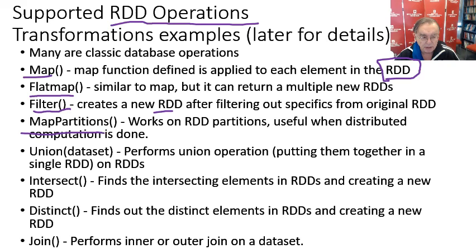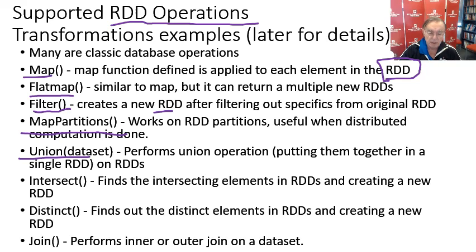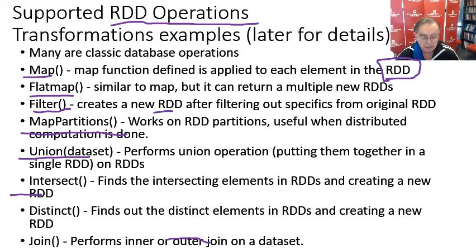We have to do these things with partitions because we want to run in parallel. Another standard database concept is a union — you have multiple RDDs and join the answers together to produce a single RDD. An intersection finds out what's in common between RDDs. Distinct finds out what's distinct in RDDs and creates a new RDD of the distinct answers. Finally, join is a standard database concept — outer or inner join — applied to a data set.